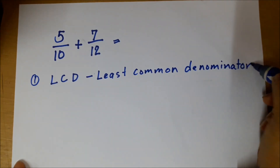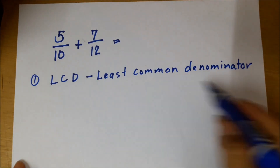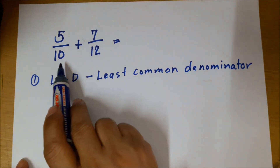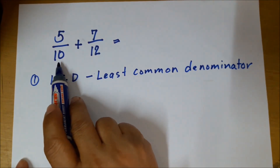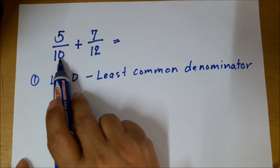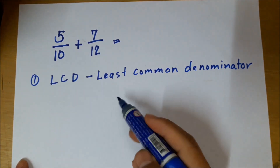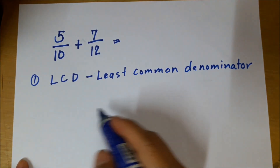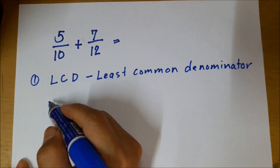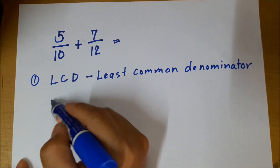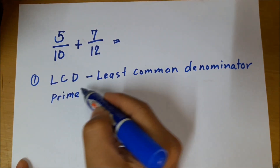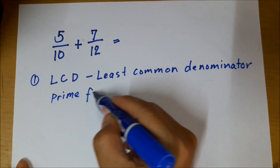To find the least common denominator, we're going to find a common number — one number that can be used as the denominator for these two fractions. To find the LCD, the first thing to do is find the prime factors of the denominator.